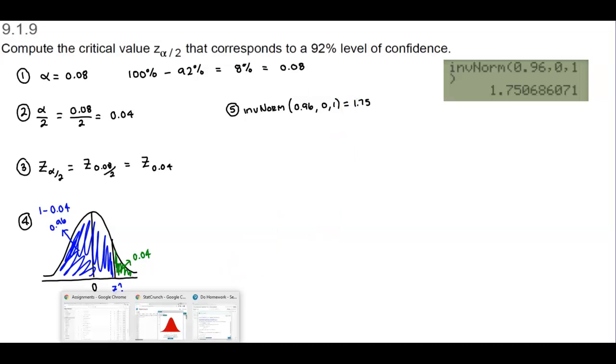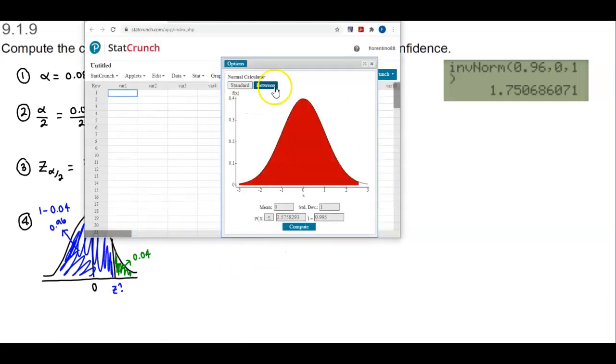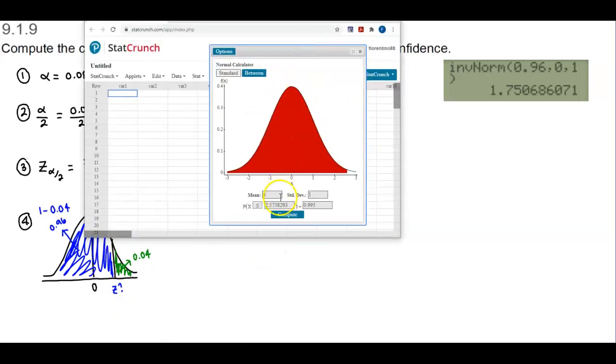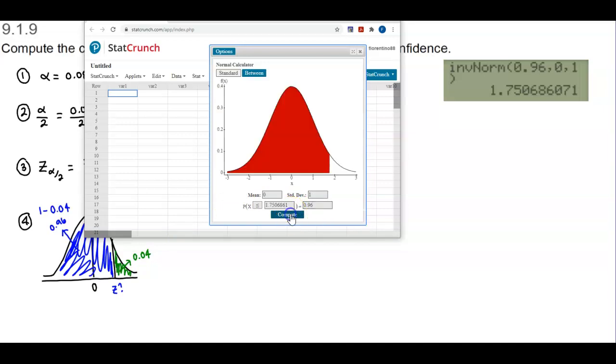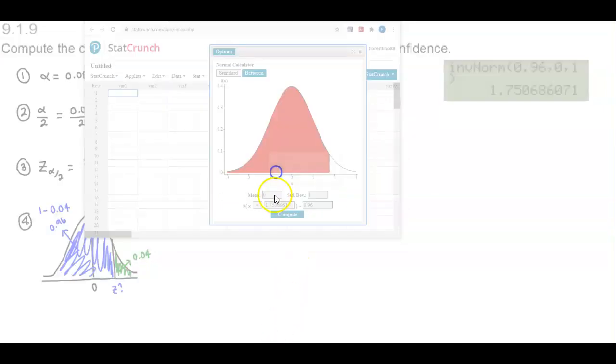How would we do this on StatCrunch? Using the normal calculator, we know that our mean is 0, our standard deviation is 1, and we want the value to be less than so we can figure out what that value is. If we put in our area of 0.96 and then compute, you can see that we get the value of 1.75 here.